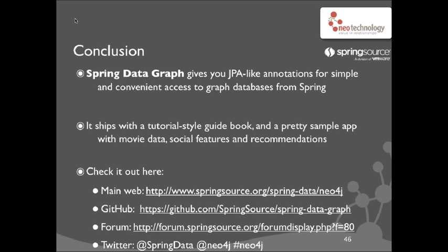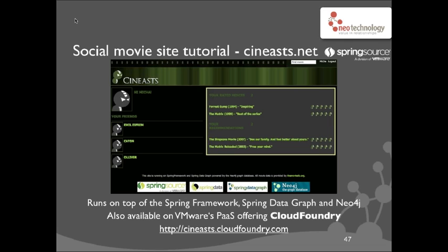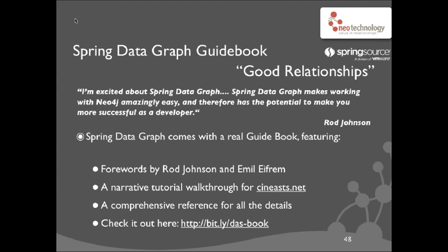Okay, so first a conclusion. Spring Data Graph is a JPA-like library that gives you awesome access to graph databases from Spring. It has a tutorial-type guidebook that is pretty amazing — it's an 80-page book. The first half is a very easy-to-read tutorial that reads like a narrative. It goes through a sample application called Cineast, which shows all these movies and actors and includes real recommendations and social features. The source code for this is all open — it's on GitHub. It runs on VMware's PaaS offering, Cloud Foundry. And the guidebook goes through exactly that.